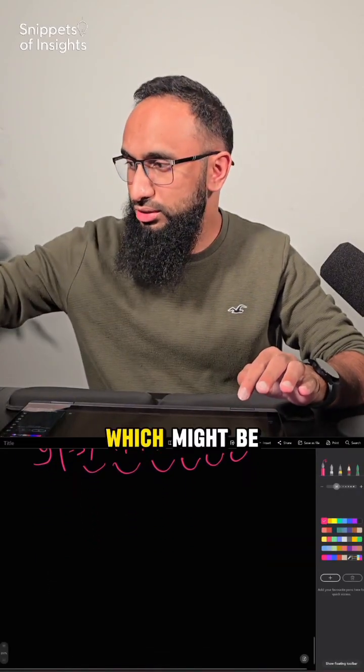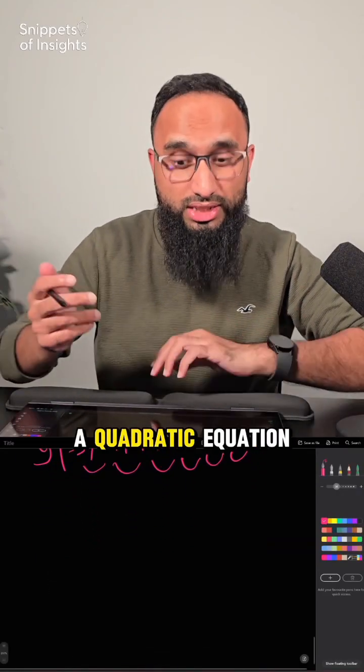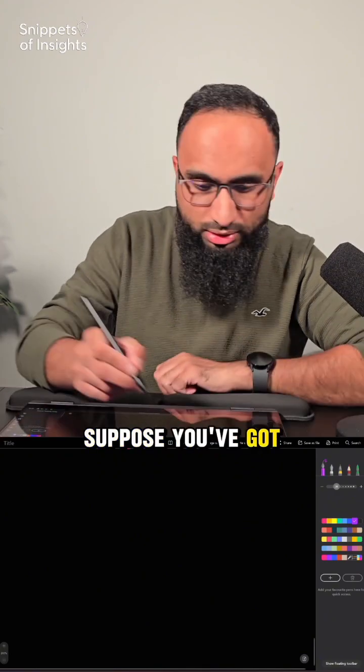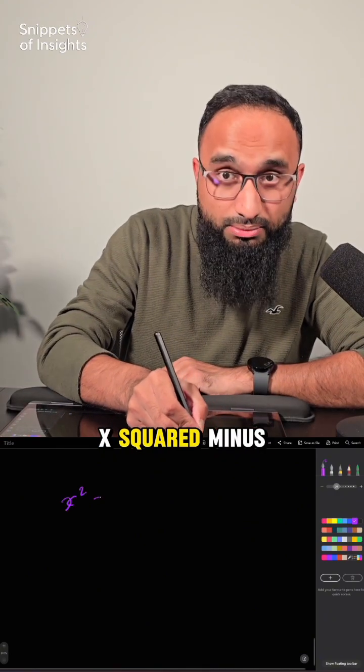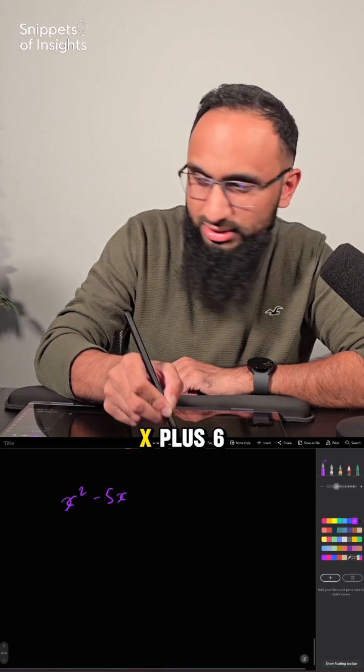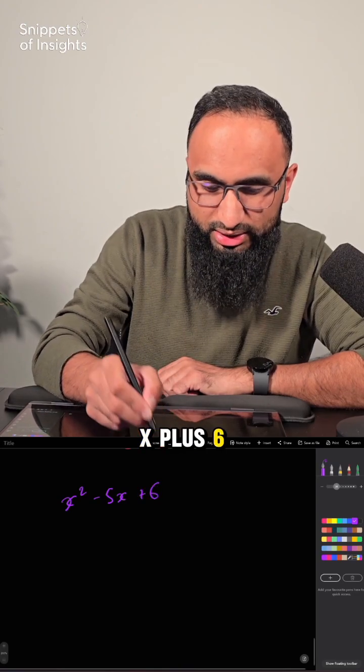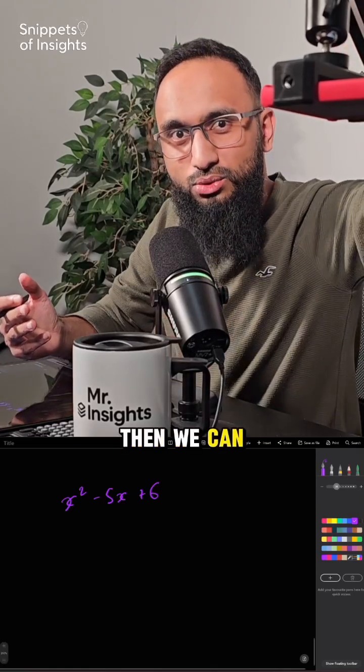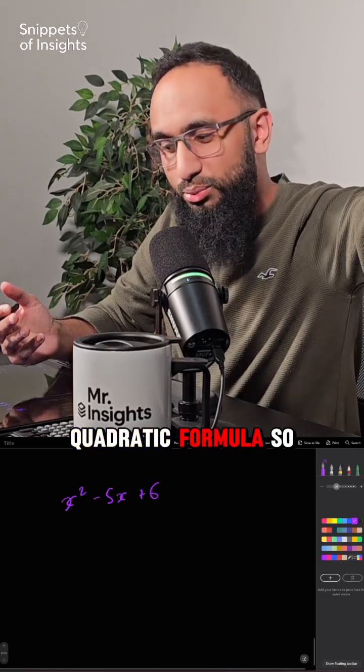There might be a question which is a quadratic equation. So if that is the case, suppose you've got x² - 5x + 6. This is a classic. Let's factorize first. If that doesn't work, then we can always use the quadratic formula.